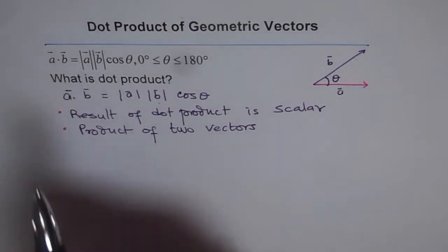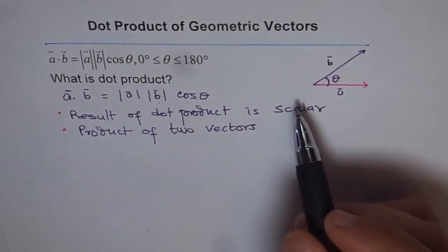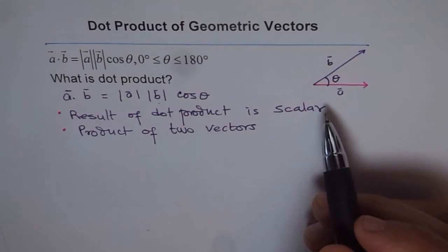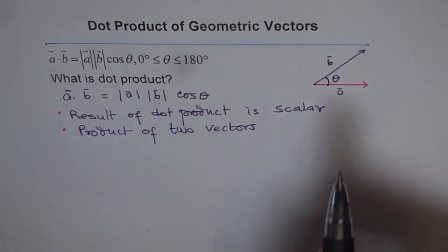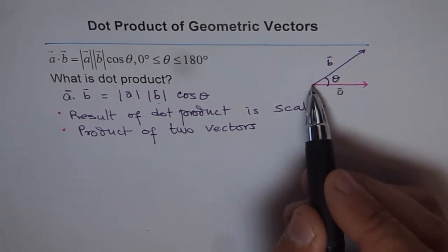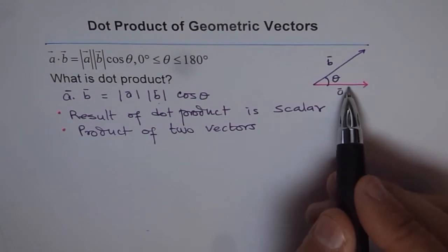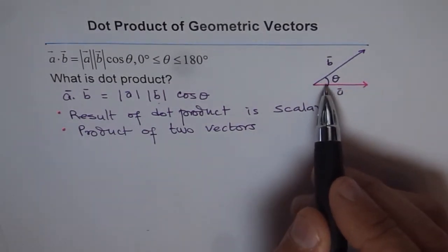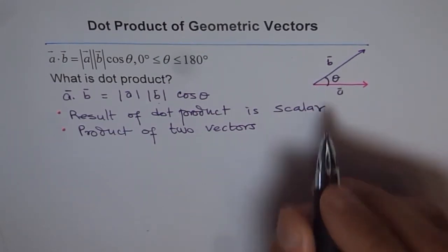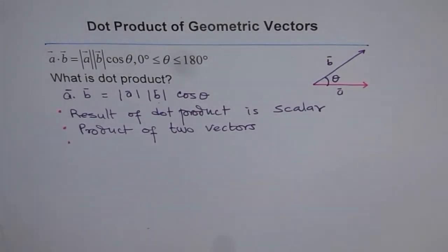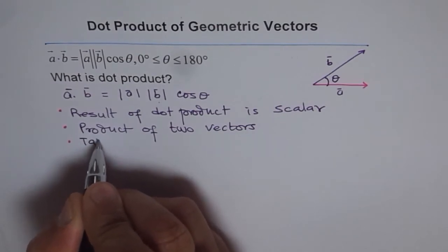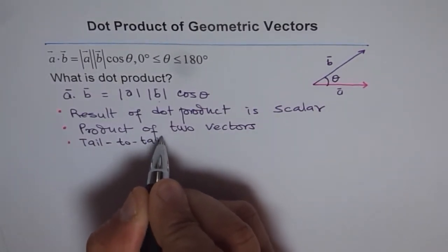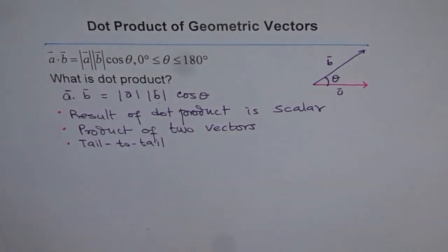Geometric vectors are called free vectors — they can be represented anywhere. So how do we find the dot product geometrically? We place them tail to tail, as shown here. Vector A could be here and vector B could be written somewhere else, but when finding the angle between them for dot product, you place them tail to tail and then calculate the angle. So when you want to find dot product, place the vectors tail to tail.